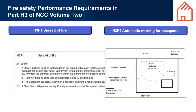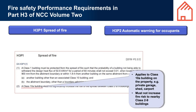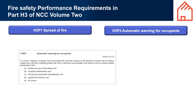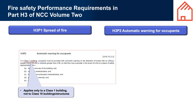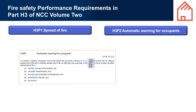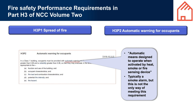Figure H3 P1 illustrates a Class 10A building applied to a Class 10A building on the property, for example a private garage, shed or carport, which must not increase fire risk to nearby Class 2 to 9 buildings. H3 P2 - Automatic Warning for Occupants. This applies only to a Class 1 building, not to Class 10 buildings or structures. Automatic means designed to operate when activated by heat, smoke or a fire-sensing device, typically a smoke alarm, but this is not the only way of meeting this requirement.